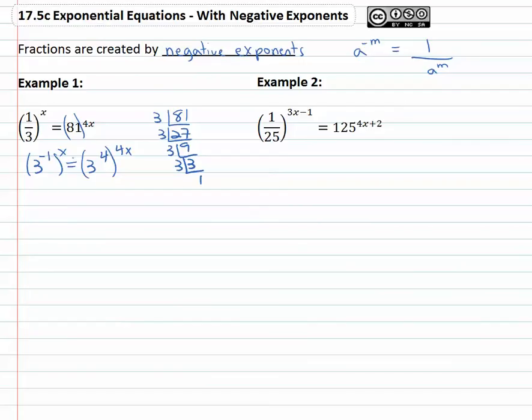Don't forget the exponents that were there to begin with, because our next step is to multiply them together, giving us three to the negative x equals three to the sixteen x. And we know if the bases are the same, the exponents must also be the same.